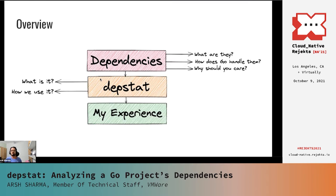Then, I'll introduce you to Depstat, which is the command line tool we use in the upstream project to analyze dependencies. I'll first show you all the subcommands it offers, and then we'll look at how exactly we use it for the Kubernetes project. In the end, I'll touch on how I got the opportunity to work on this project, and I'll also go over some of the mentorship opportunities available if you too are looking to contribute to Kubernetes.